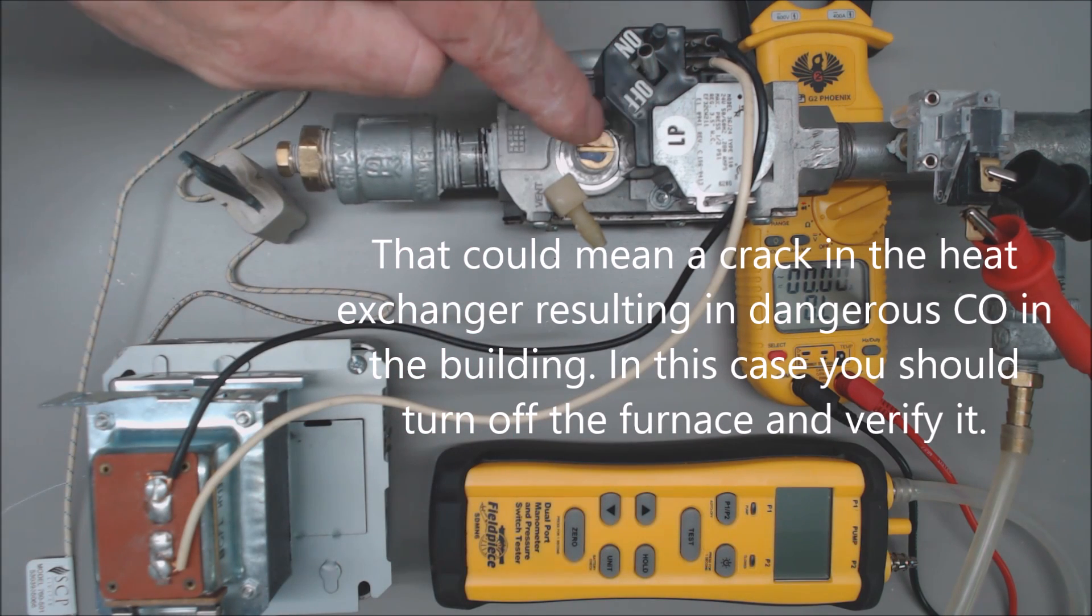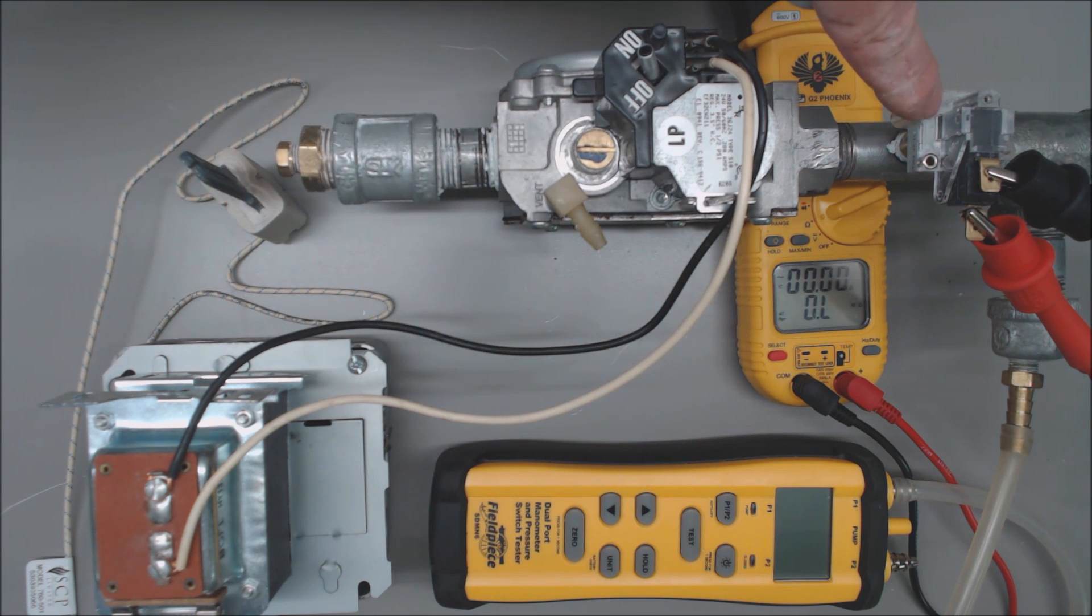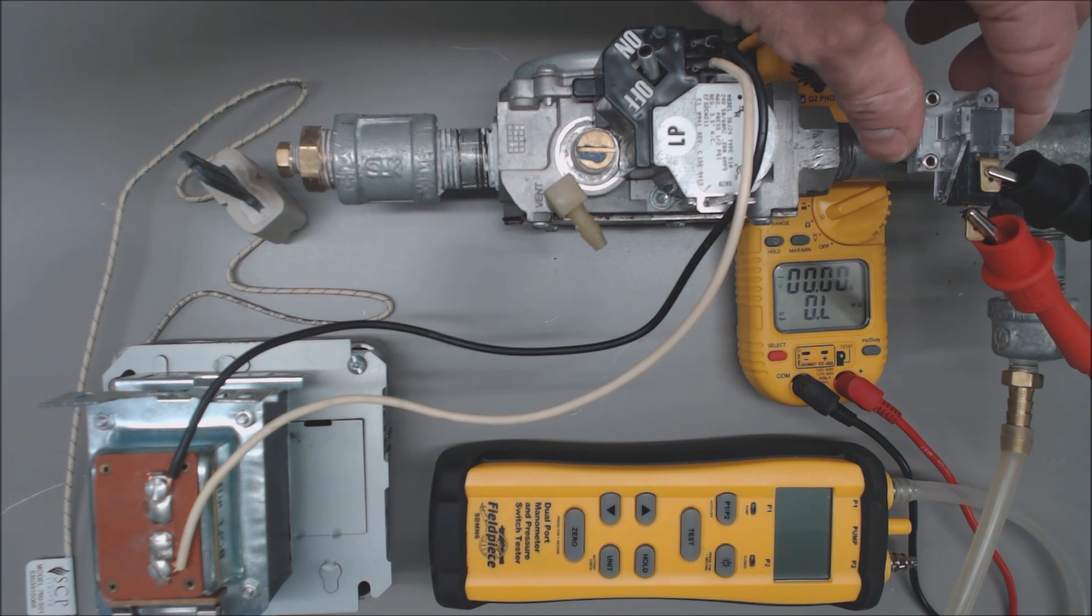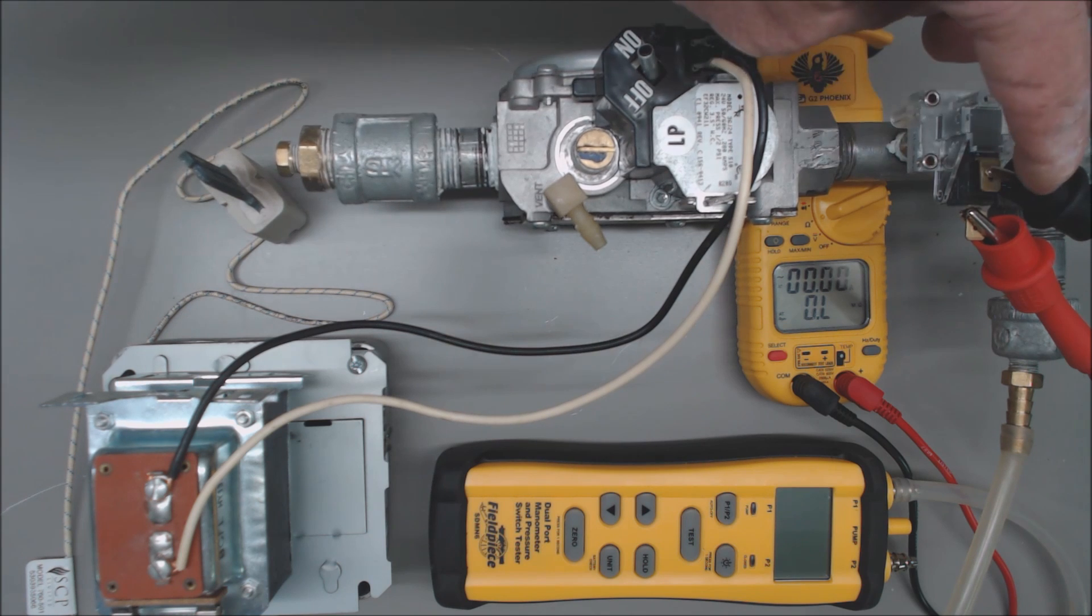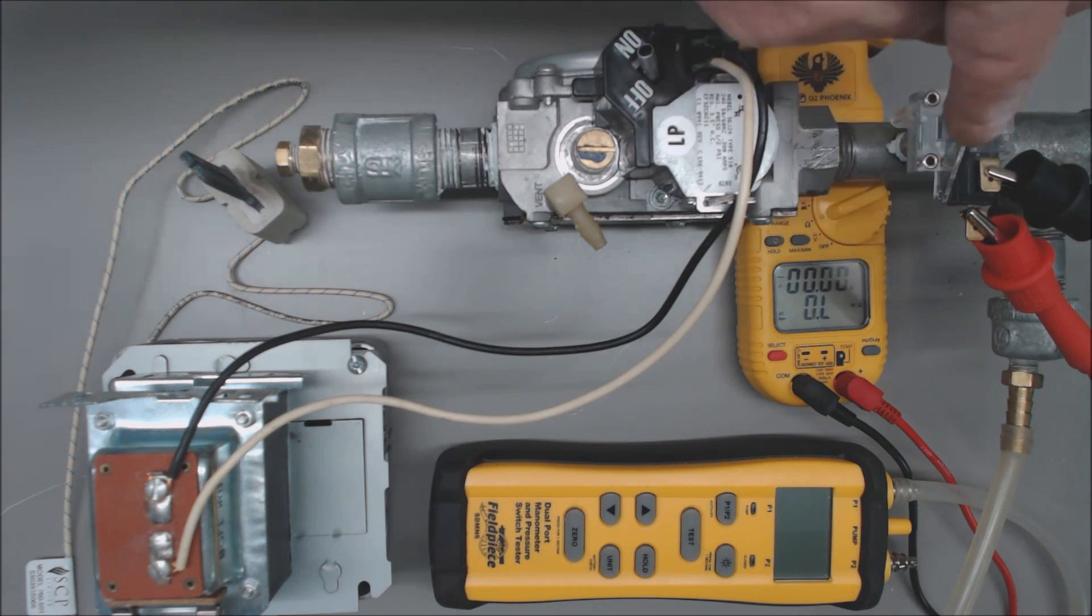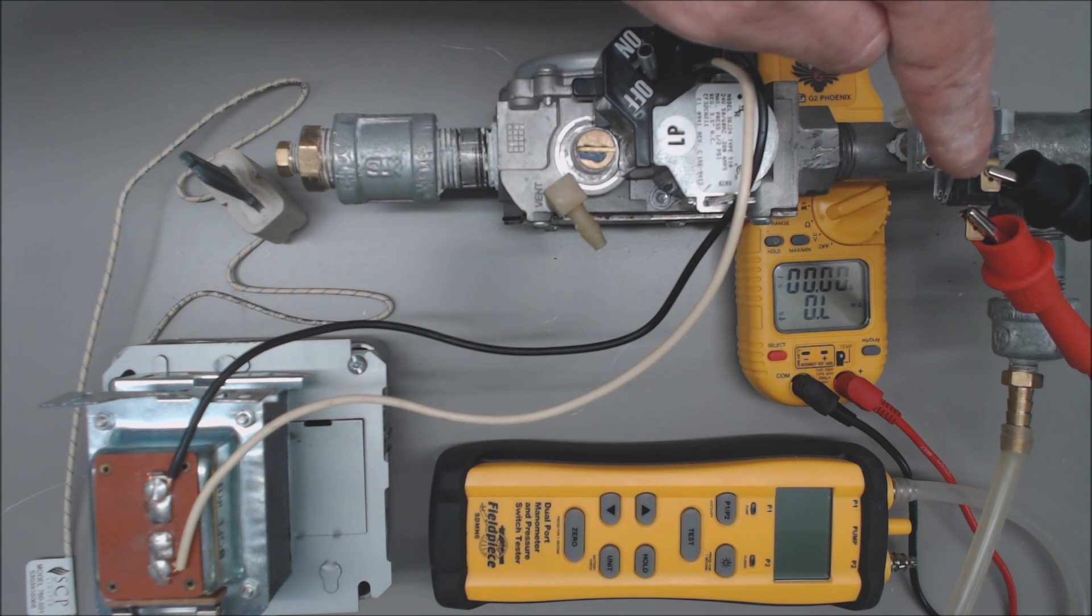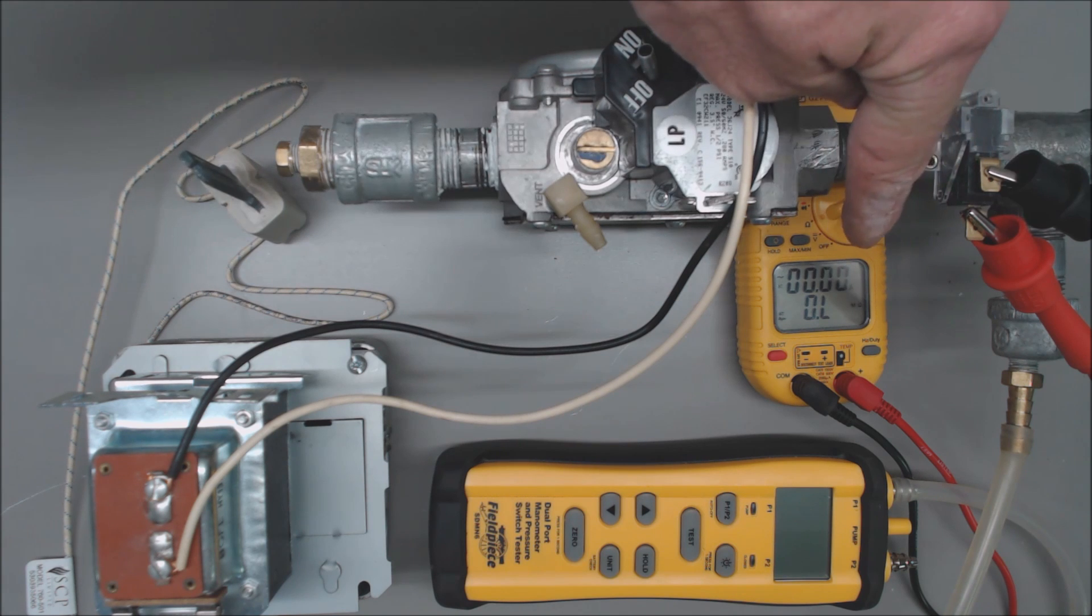So this gas valve has already been converted to LP. The spring has been changed. I have a propane orifice here, and what we have is this installed with our alligator clips attached to our multimeter right here and we're reading resistance. So we don't have a 24 volt signal going through these and going to the limit switch right now. We're just reading the resistance value.